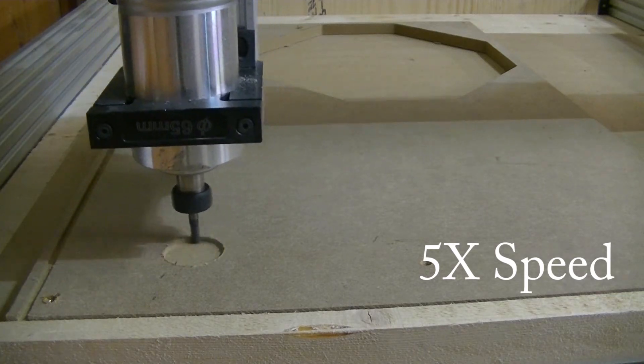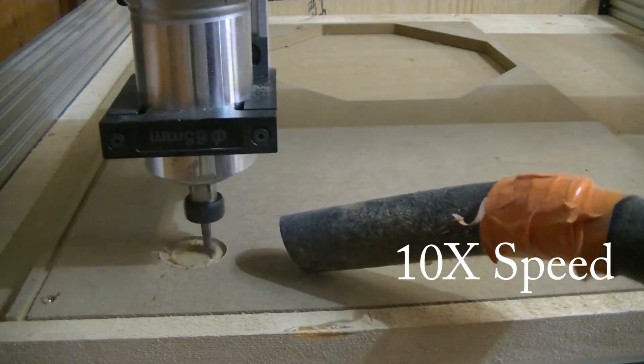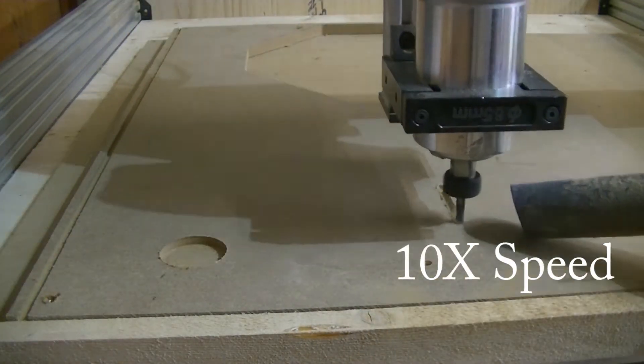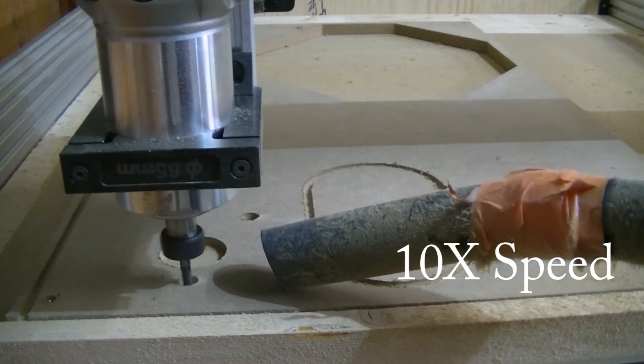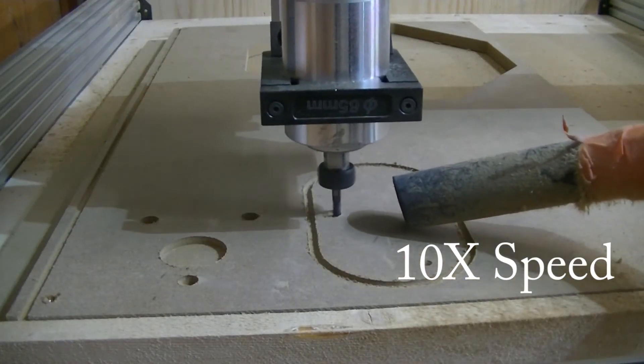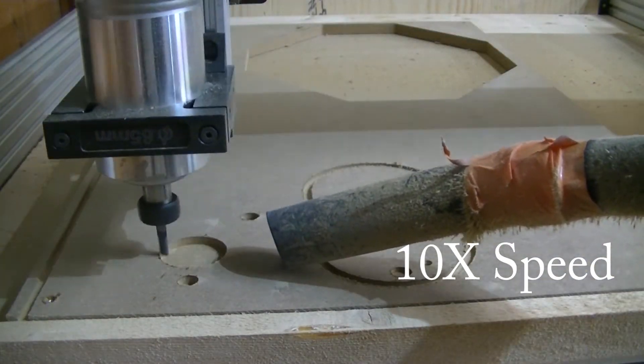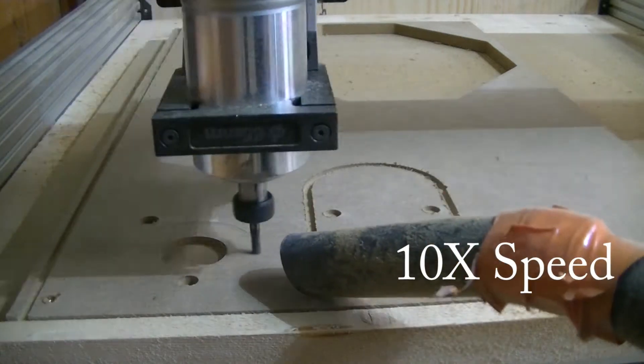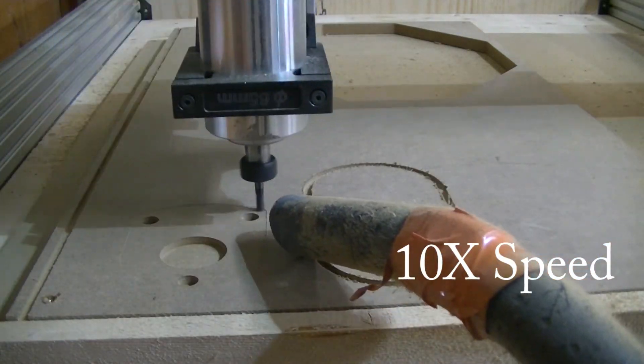And here you see the first part of the cut at five times speed. And honestly, even in real time, it wasn't too bad. It went quite quickly. By the way, this is the first project where I'm using Fusion 360 to actually make the G-code. So what you see here is a 2D adaptive cut. And luckily enough, there was actually a post-processor for ESTL-CAM built into Fusion, which I hadn't thought about checking previously.